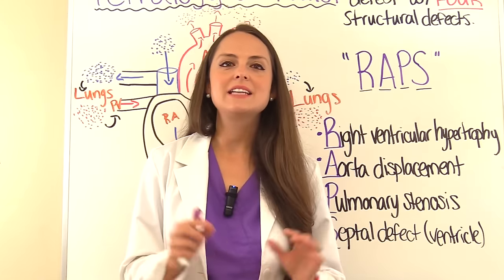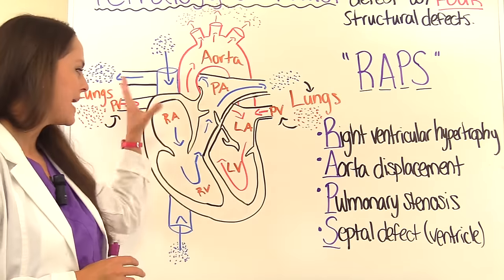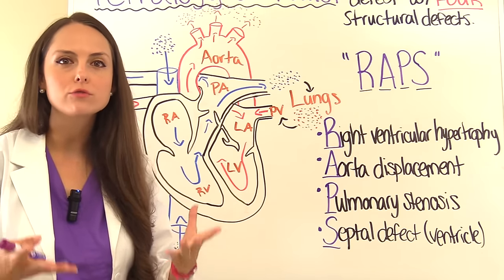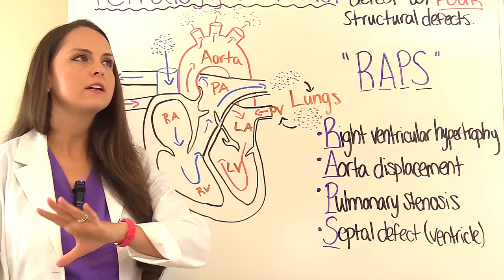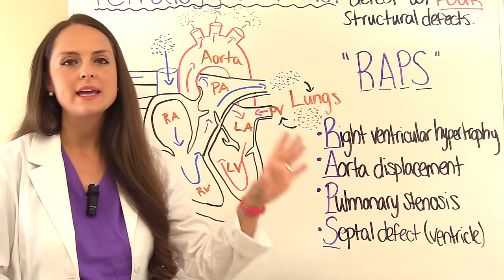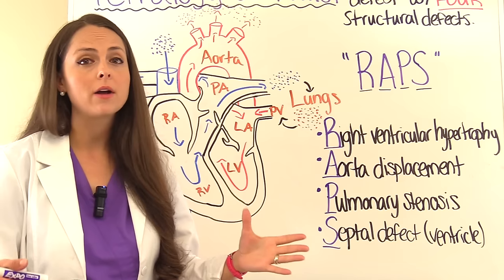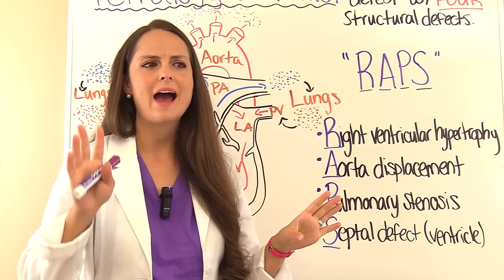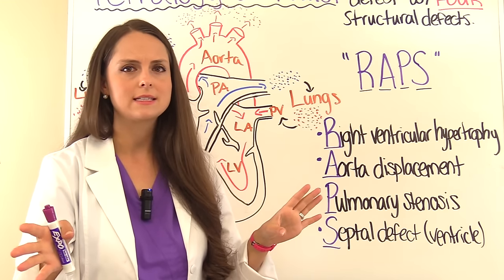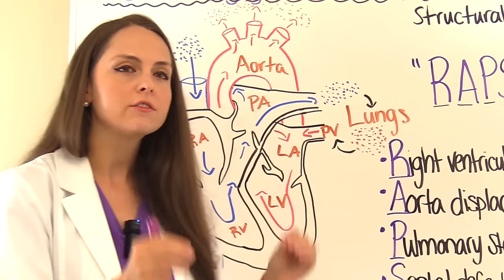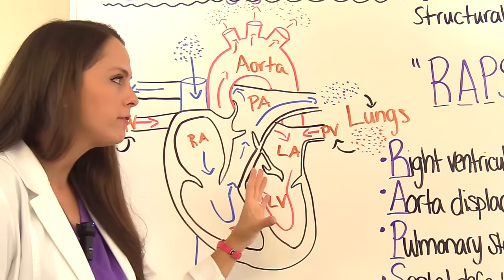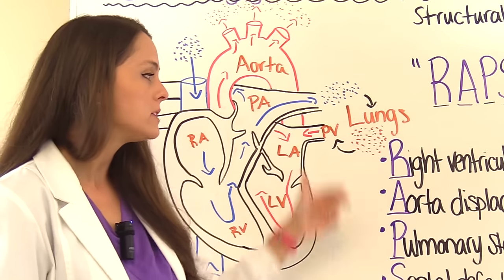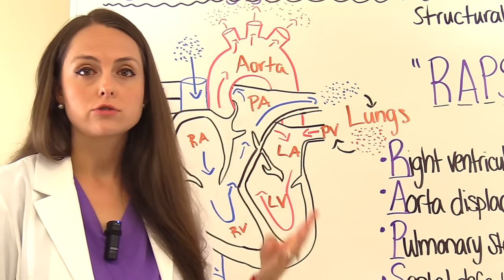To understand Tetralogy of Fallot, you'll want to know the basic anatomy of the heart and how blood normally flows through it, because as you study other congenital heart defects it will just make sense. Once you can see how blood flows, you'll understand why a patient has certain signs and symptoms. So let's cover normal blood flow first, then compare it to a person with Tetralogy of Fallot and discuss the structural defects.